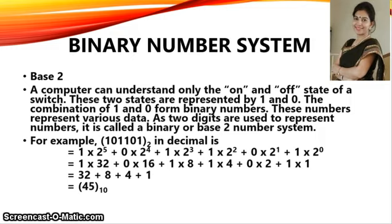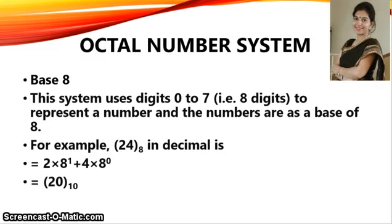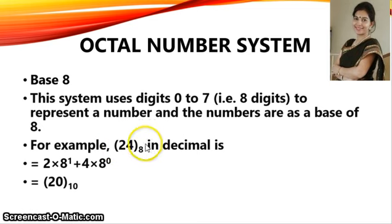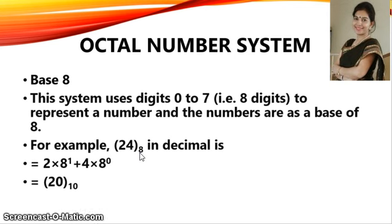The octal number system has a base of 8 and uses 8 different digits from 0 to 7. When representing an octal number, we mention the base 8, otherwise you will not be able to distinguish whether a number belongs to the octal, decimal, hexadecimal, or binary number system. It is always better to mention the base of the particular number system.